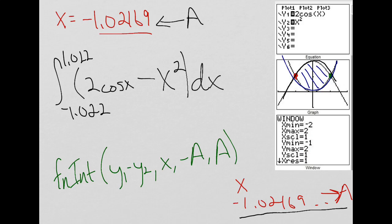So having these in my calculator, I don't want to retype it all over again when doing my fnint. So I do fnint, y1 minus y2, because that's 2cosx minus x squared. And then, as I said, we stored this into our a, so from minus a to a. That winds up giving me my answer of 2.7009.